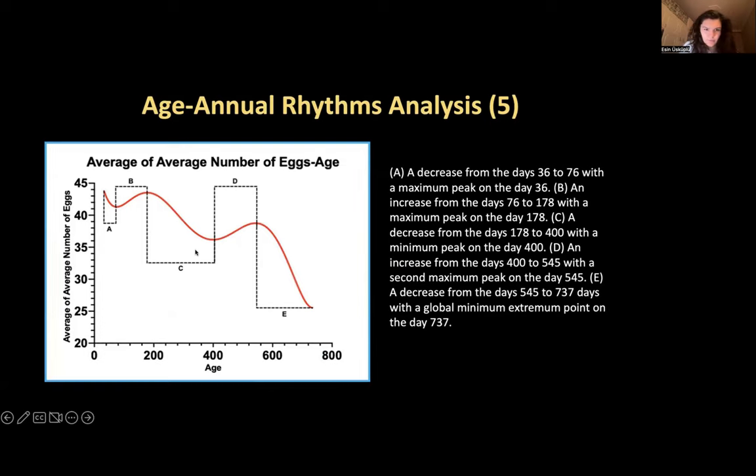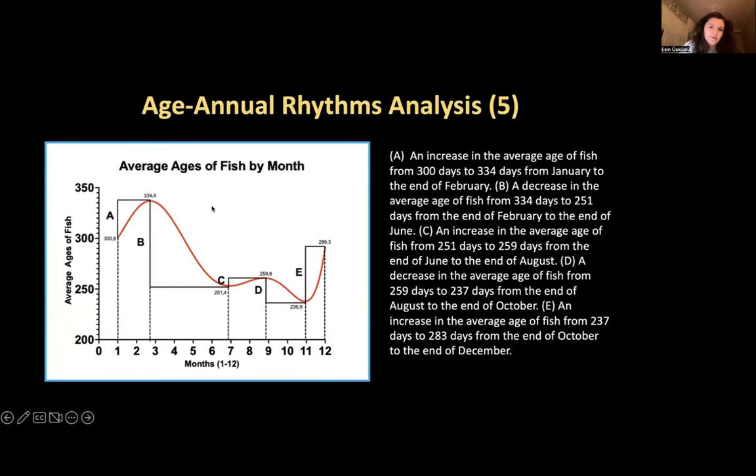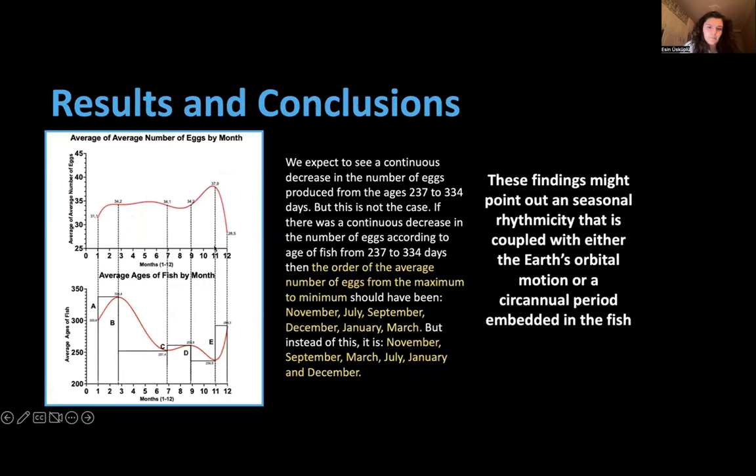This is again the average ages of fish by month graph. What we have to see is a constant decrease in the average number of eggs from 236 to 334. But if you compare these two graphs we see that it is not the case. The month that we expect the lowest number of eggs is actually not that number.